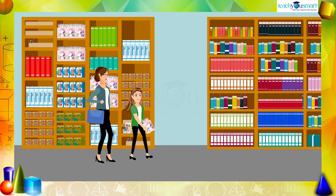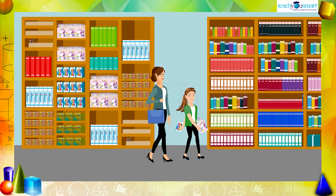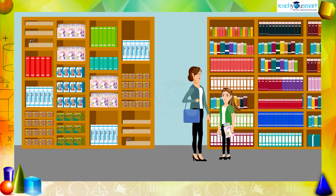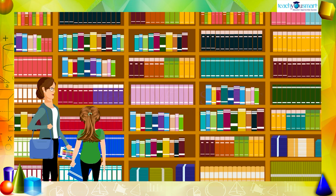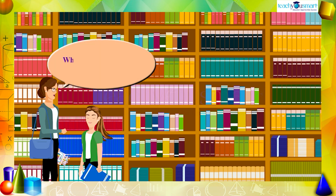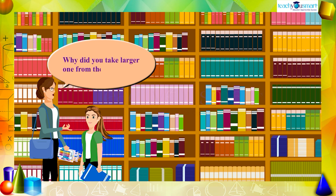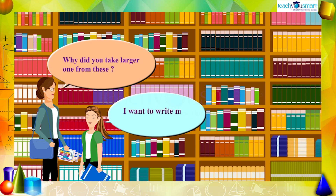One day, Anu and her mother went to a bookstall to purchase some items. She found two types of books there — red and blue — the blue being larger than the red. From them, she selected the blue books. Then her mother asked why she took the larger one, and she told that she wants to write more in one page.